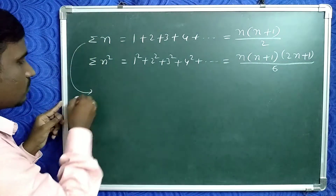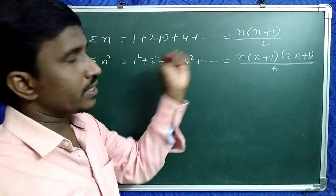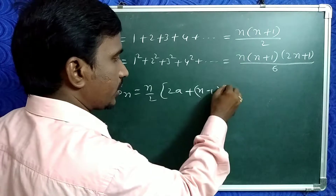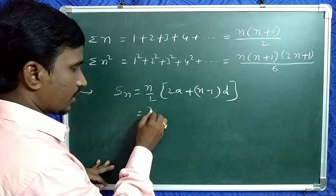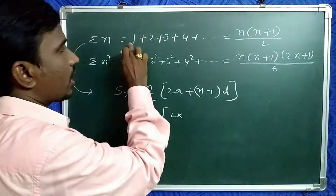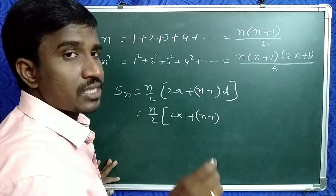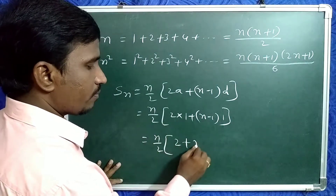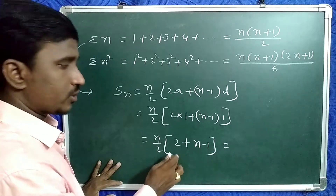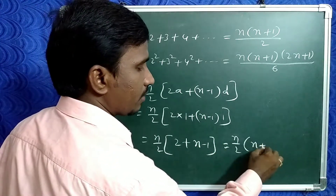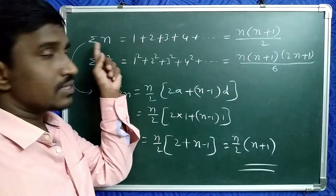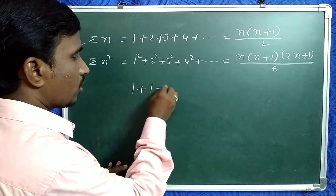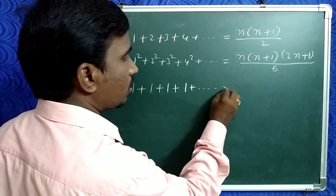You all know this is easy. These terms are in AP, where Sn = n/2 · (2a + (n−1)d). With n terms, first term a=1 and common difference d=1, so it gives n/2 · (n+1), which is n(n+1)/2 — the sum of first n natural numbers. Also note that 1+1+1+... n times equals n, so σ1 = n.